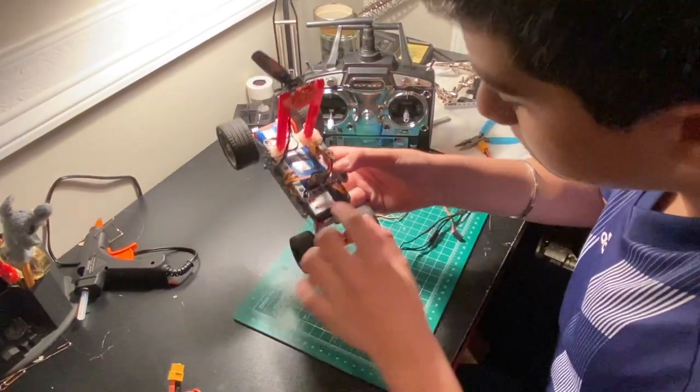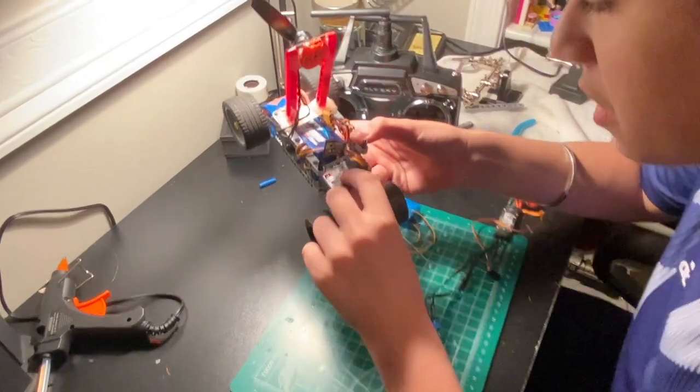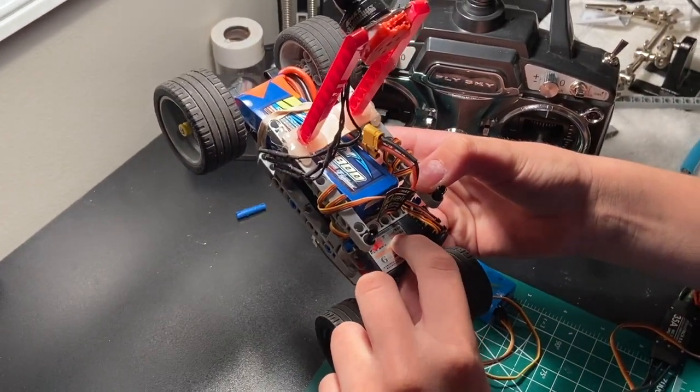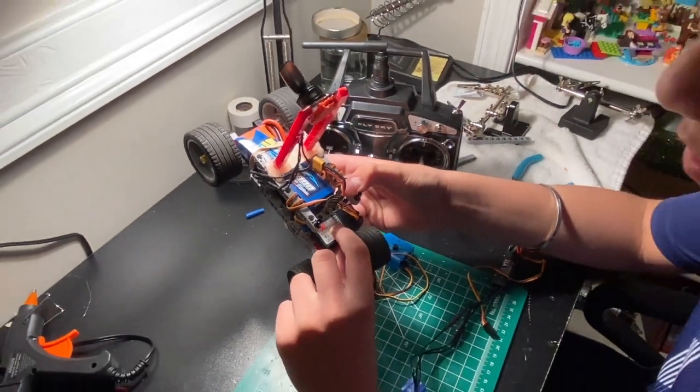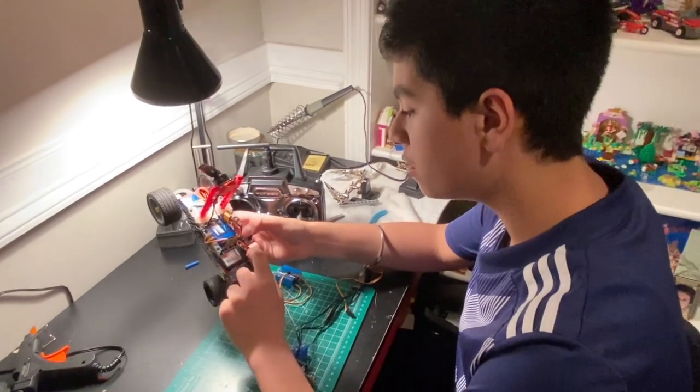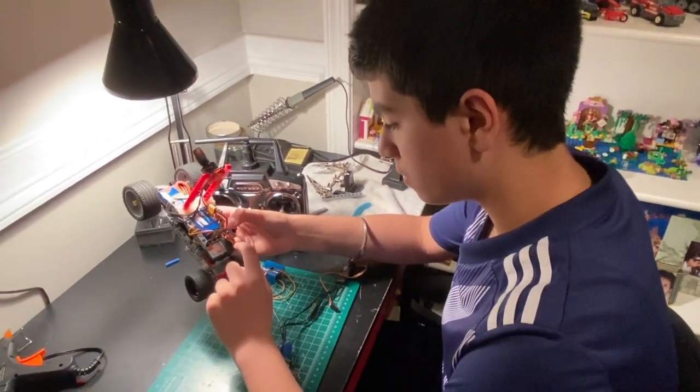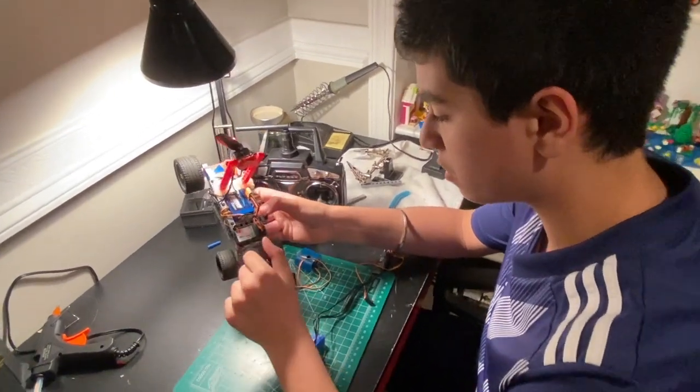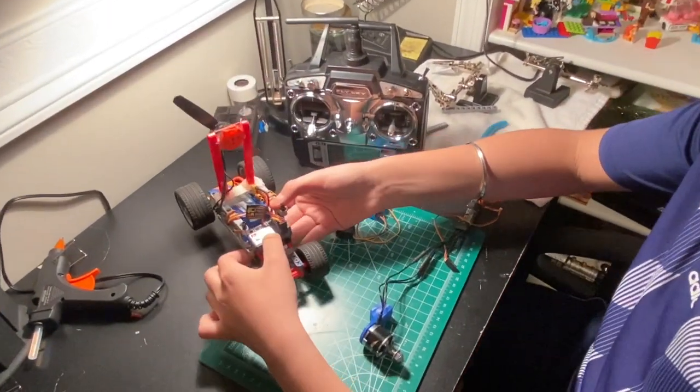Now on your receiver, it will also say something like there should be an S, a positive sign, and a negative sign. What that means is your signal wire, your positive wire, and your negative wire. They should all just plug into your receiver, but do not flip them incorrectly. That's not good for your car.